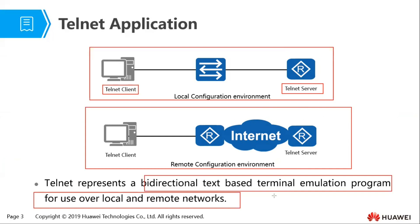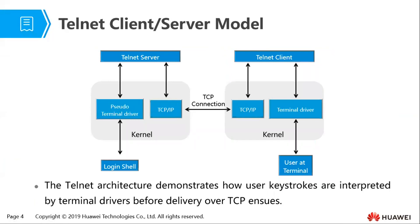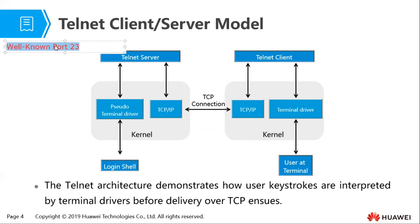Huawei routers and Huawei switches are capable of acting as telnet servers. Telnet uses TCP, and its well-known port is TCP port 23. The server will be listening and waiting for connections on TCP well-known port 23.